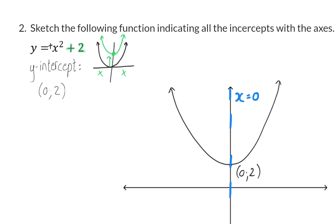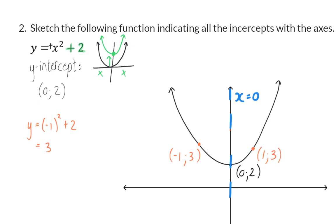Although this graph has no x-intercepts, it is important to always indicate more than one coordinate on a graph. Choose easy x values to substitute. For example, substitute x equals minus 1: squaring it and adding 2 gives a y value of 3. Because this parabola is symmetrical around the y-axis, substituting x equals 1 also gives a y value of 3. So when there are no x-intercepts, remember to always add two extra coordinates.